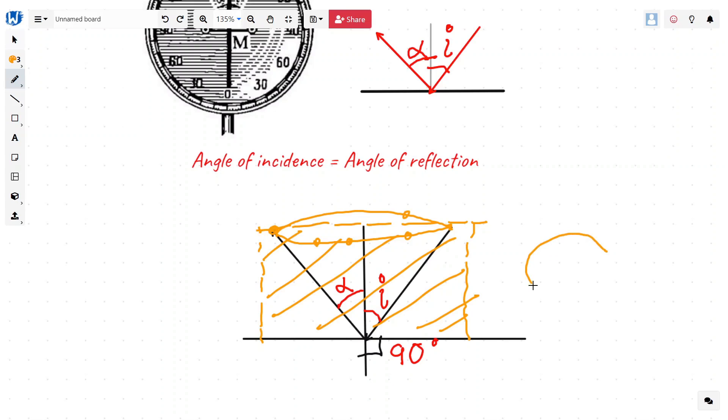So, if you look at from the top, basically, this is the point of incidence. Right. So, this is the path of the light. This is the normal and this is the reflected ray. They all will be on the same plane.